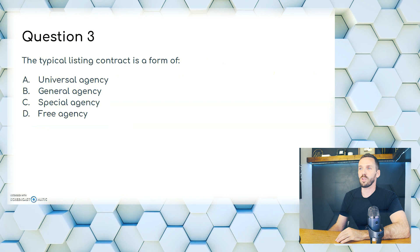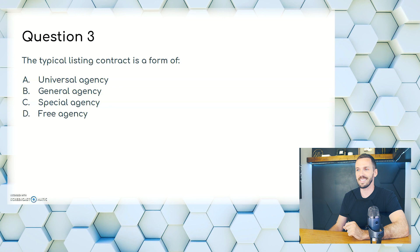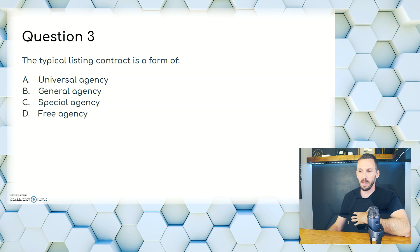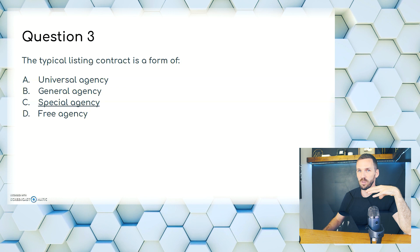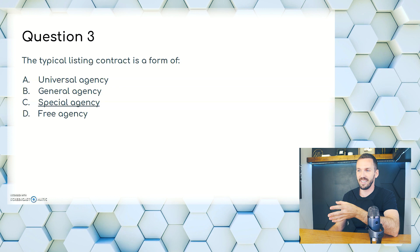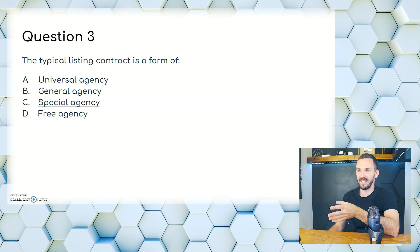Question 3. The typical listing contract is a form of A, universal agency; B, general agency; C, special agency; or D, free agency. This is memorization, but pretty simple. We are special agents. Universal agents can act on behalf of a principal — we can't do that. A general agent is like a property manager — they have some power, where we don't. Free agency is a sports term. The answer is C.